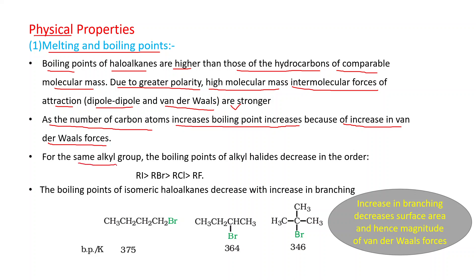For the same alkyl group, the boiling points of alkyl halides decrease in this order: alkyl iodides have the highest boiling point and alkyl fluorides have the lowest. The reason is the same — going from iodide to fluoride, molecular mass decreases and surface area decreases, so the magnitude of van der Waals forces also decreases.